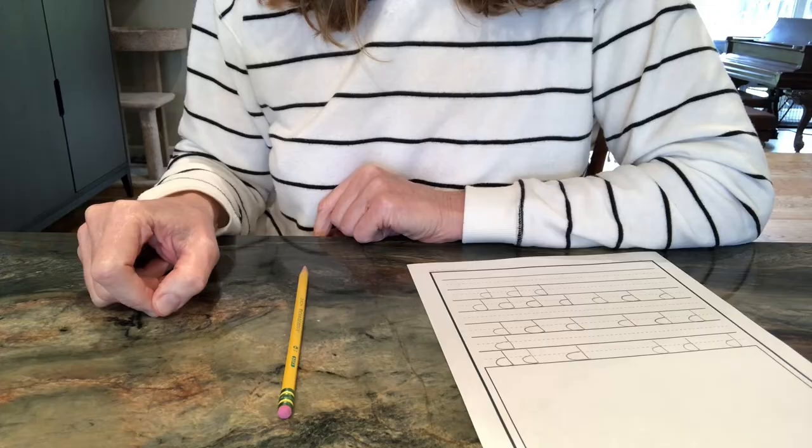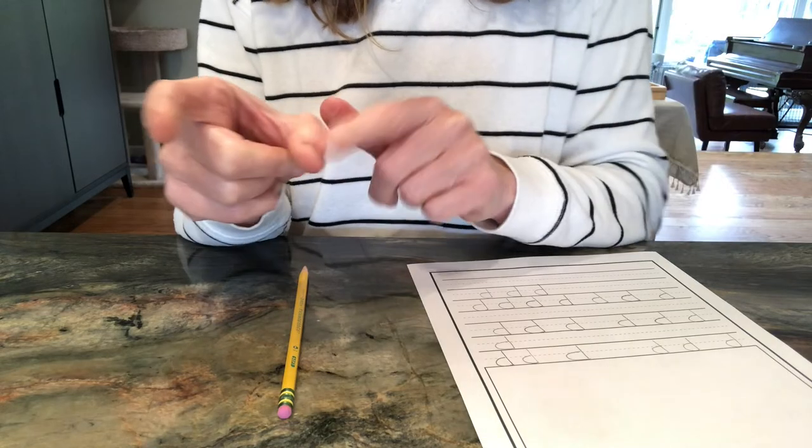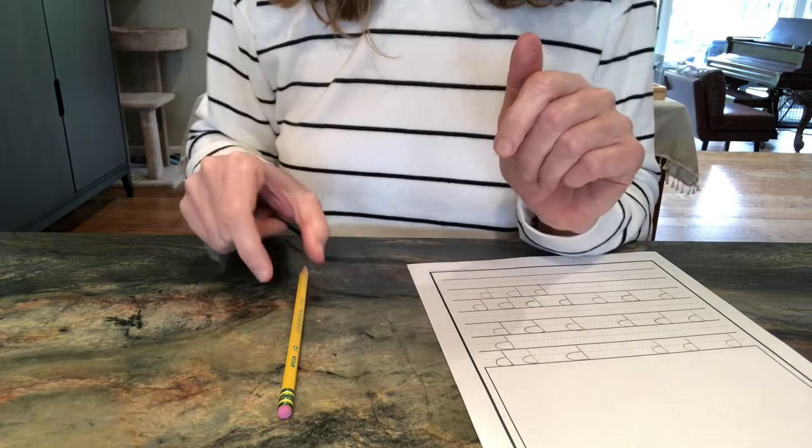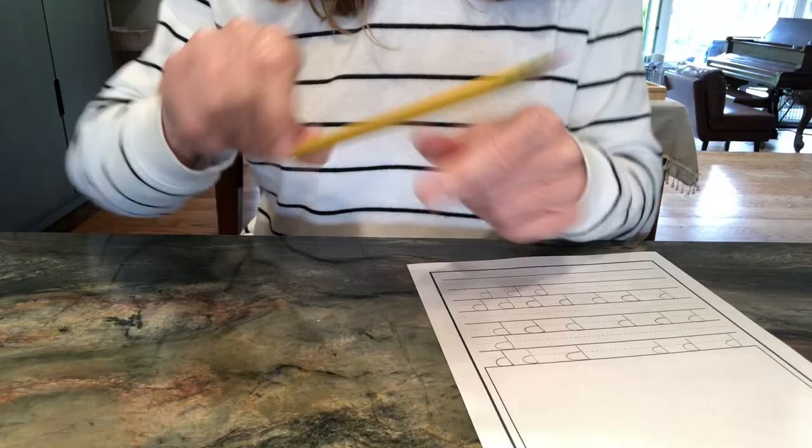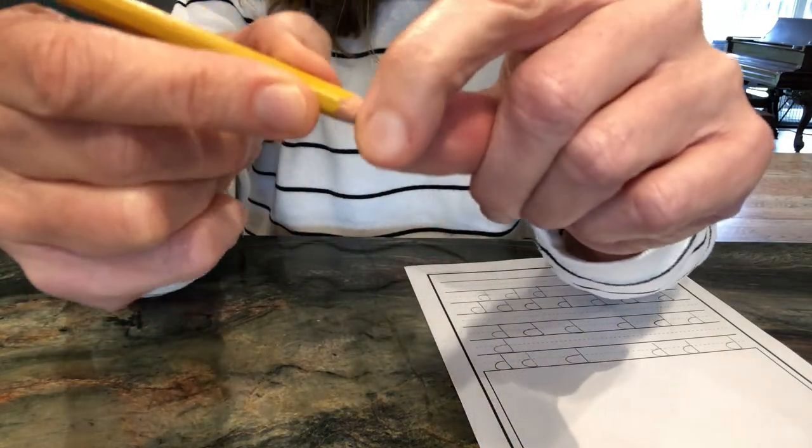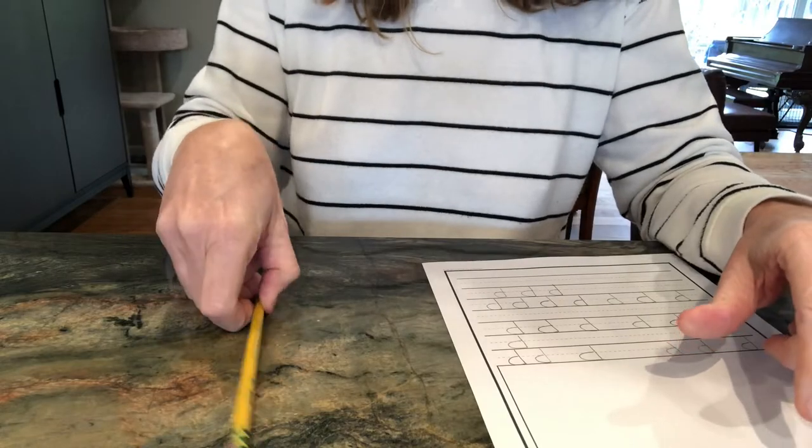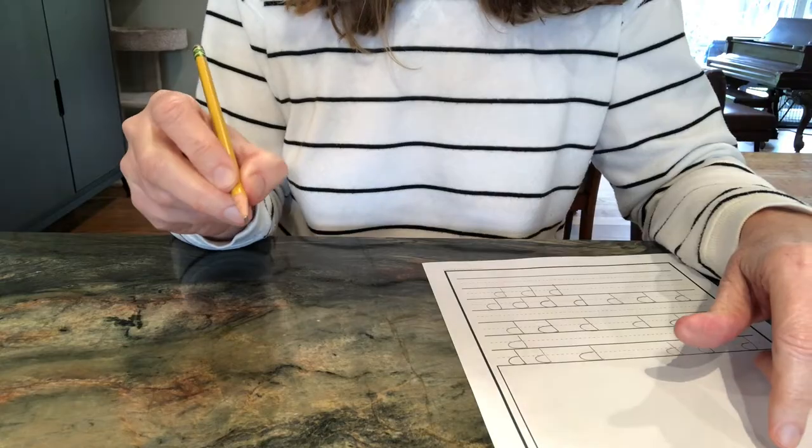When we grip our pencil, when I say pick up your pencil, we're going to use two fingers, our thumb and our pointer, and we're going to grip it right at the line where the color meets the sharpened part or just above where the line is. If you can grip it with three fingers, if that's helpful, you can do that.